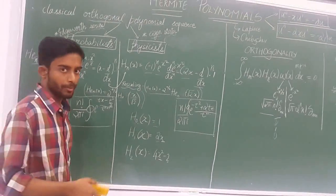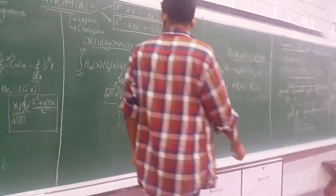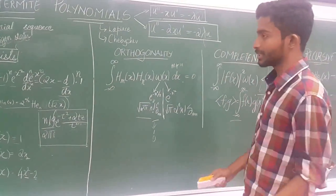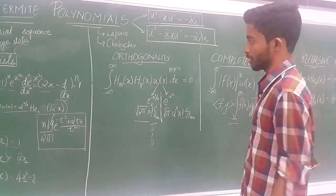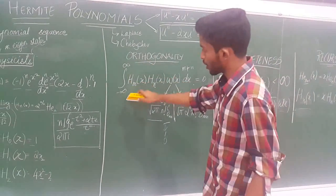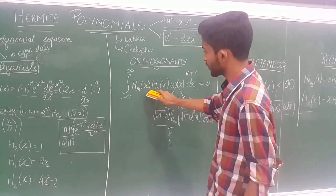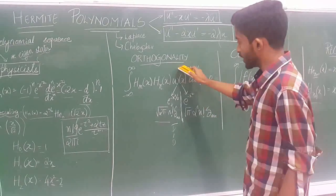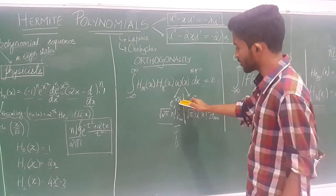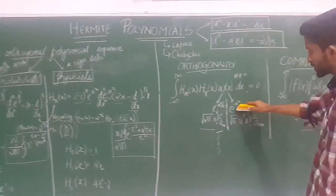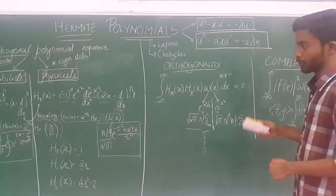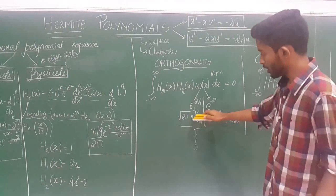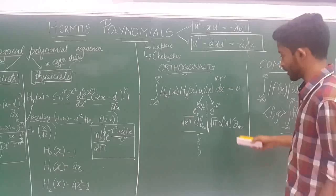Now let us see the properties of Hermite polynomials. Hermite polynomials are orthogonal, satisfying the orthogonality property. This states that the integral from minus infinity to infinity of H_m(x) × H_n(x) over a weighted function equals 0, where the weighted function is e^(-x²/2) for probabilistic Hermite polynomials and e^(-x²) for physicist Hermite polynomials. e^(-x²/2) can also be written as √(2π) × n! × Dirac delta function.